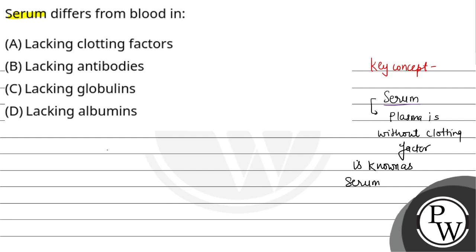So plasma is a part of blood. Blood ke andar formed elements hain aur plasma hai. Lekin jo serum hai, that is like plasma but without the clotting factors. Plasma mein clotting factors hoti hain, like fibrinogen protein, but it is absent in the serum. So serum jo hai, wo blood se differ karta hai kyunki serum ke paas clotting factors nahi hain.